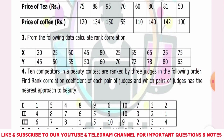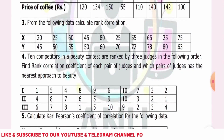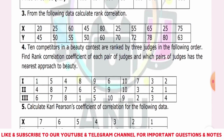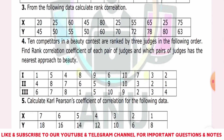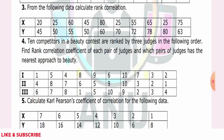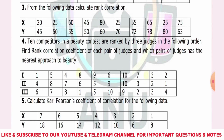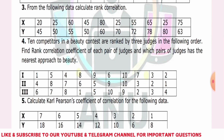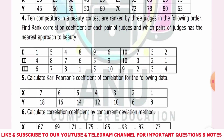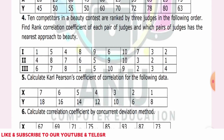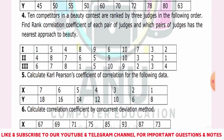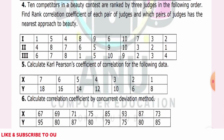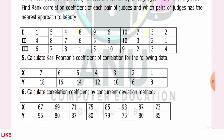This is the first observation — this is the judgment. Judgment 1, judgment 2, judgment 3 — there are three judges. First R1 minus R2, R2 minus R3, R3 minus R1 — three judges compare. This is the Coefficient of Correlation.